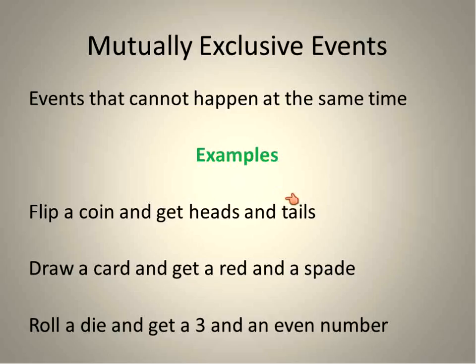So you would either have to get heads or tails. You would either have to get a red card or a spade. You would have to get a three or an even number. You can't have them at the same time. They'd be designated using the word OR. Those are examples of mutually exclusive events.